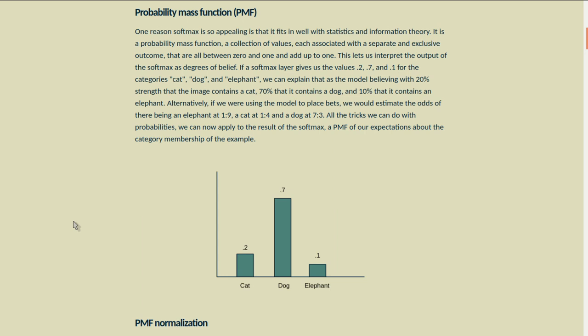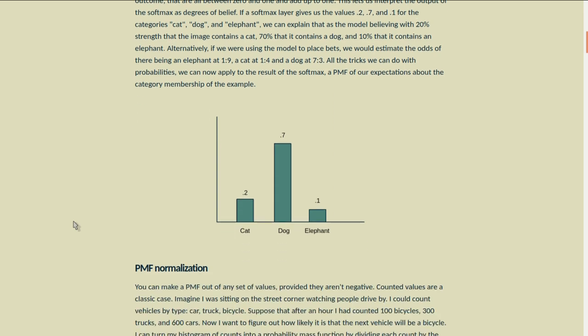Alternatively, if we were to place bets using this model, we would estimate the odds of there being an elephant at 1 to 9, a cat at 1 to 4, and a dog at 7 to 3. All the tricks we can do with probabilities we can now apply to the results of the Softmax and a probability mass function of our expectations about the category membership of the example.